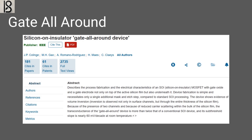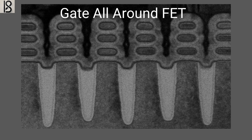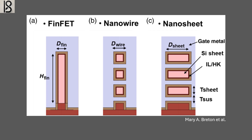The GAAFET iterates on the concept of the FinFET by wrapping the gate entirely around the channel — with the name Gate All Around, which first came about in a 1990 paper by Colinge and others. The term actually refers not to a single specific transistor structure, but to an entire class of them. What they all have in common is that their gates fully enclose the channel, rather than covering only three sides. Within the broader GAAFET category, there are two major subtypes: nanowire and nanosheet. These names reflect the shape of the channel — nanowire channels are more rounded compared to the flatter nanosheet channels, and each structure comes with its own trade-offs.